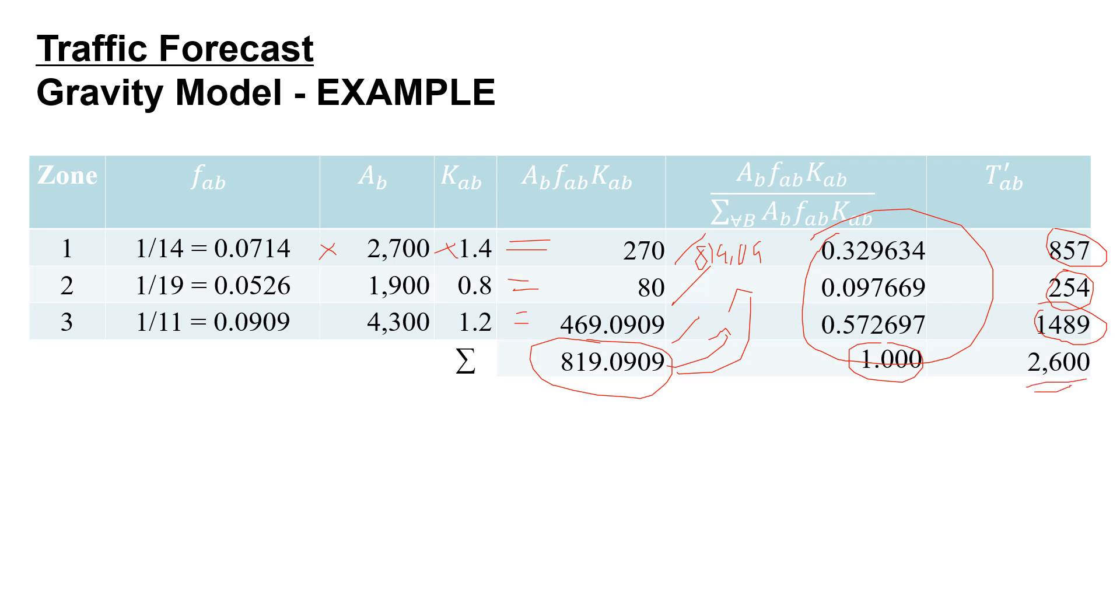And this totals up to the trips that we're told that the office park generates. So the office park generates 2,600 trips and they're distributed from each of the zones as we calculated here.